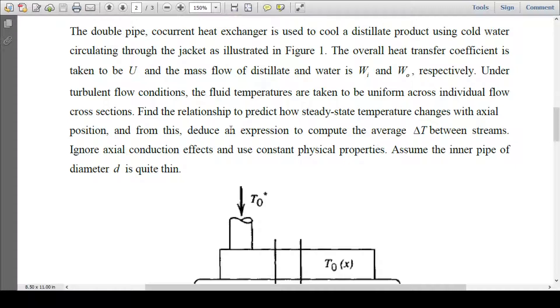From this, we have to derive an expression to compute the average delta T between streams by ignoring axial conduction effect and use of constant physical properties. Assume the inner pipe of diameter D is quite thin.